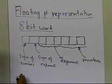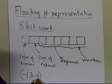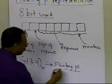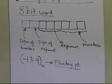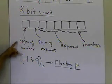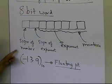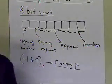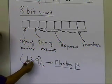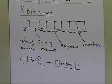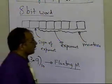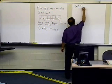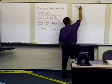So if somebody tells you to represent minus 13.9 base 10 in this floating-point format — given an 8-bit word where the first bit is the sign of the number, the second bit is the sign of the exponent, the next 3 are the exponent, and the next 3 are the mantissa — how would you convert minus 13.9 base 10 into floating-point representation?